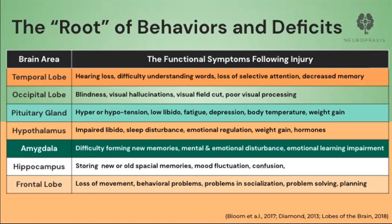If one sustains damage to the hippocampus, this can result in confusion, consistent fluctuation in mood, being unable to remember their way home from a daily walk, and misplacing items consistently. The frontal lobe is known as the center for higher-level cognitive function such as problem-solving, social skills, some movements of the body, and executive function. The ability to mentally experiment with ideas, pause before acting, meet new or unexpected problems, resist temptation, and maintain attention are all examples of executive functions.